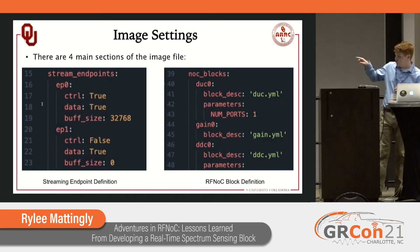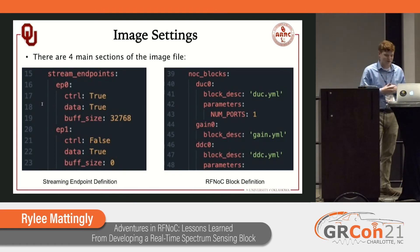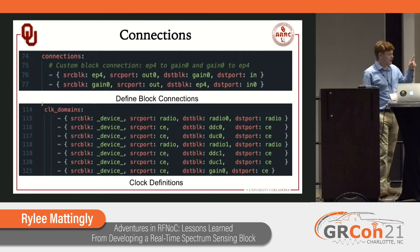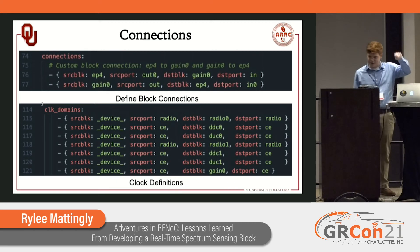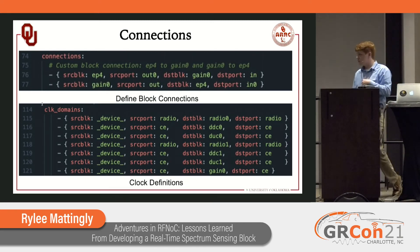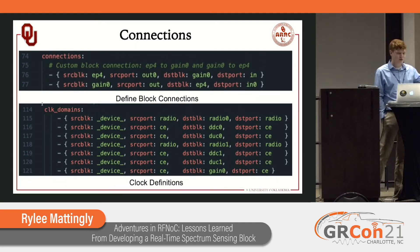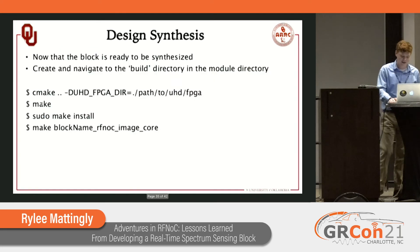Here you see the block description — you just pull in the blockname.yaml file, and through the magic of the mod tool and the make files, it knows exactly where to find that. And importantly, here are our connections: the endpoint is connected to our gain block and then the gain block back to the endpoint, which completes the loop for getting data in and out of the block. We come down here and connect our block to the CE clock in the clock domains section.